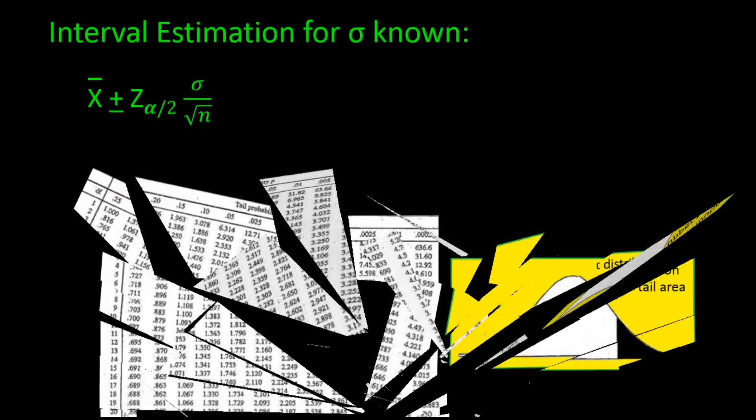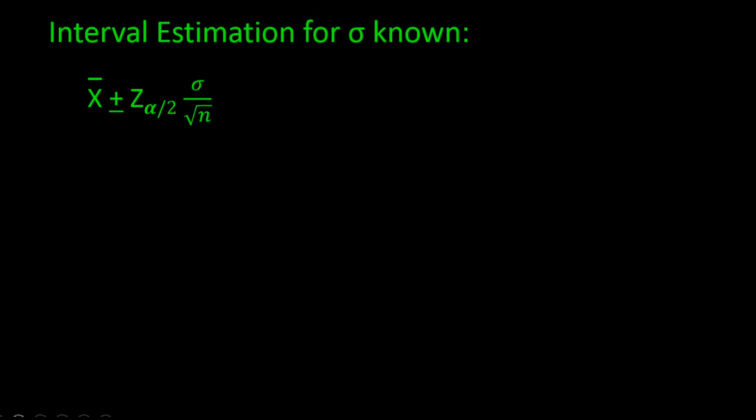Now, if you recall from the previous tutorial on interval estimation for sigma known, we used this formula: x bar plus or minus a margin of error, which is Z times sigma divided by the square root of n. Notice Z now has a subscript of alpha divided in half. The subscript can be left out, but it is more accurate to have it there. And now that we understand better what alpha is and that for confidence interval estimations we need to split alpha in half, then it is a good idea to have this as a subscript.